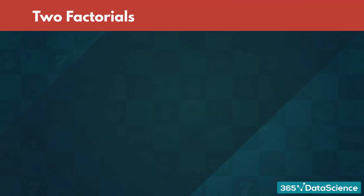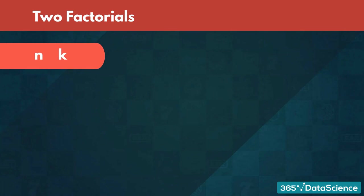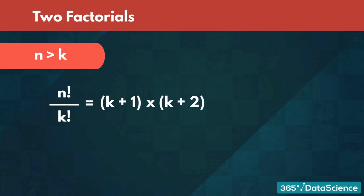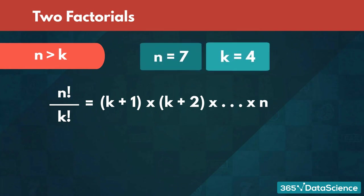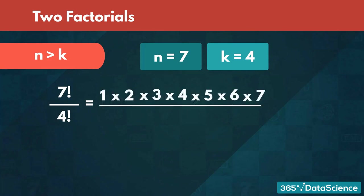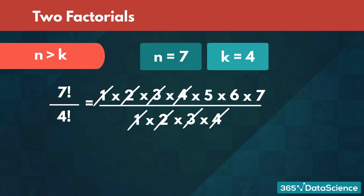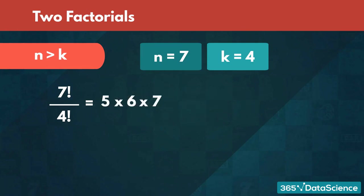An important observation is that if we have two natural numbers k and n, where n is the greater number, then n!/k! = (k+1) × (k+2) × ... × n. Let's look at an example where n is 7 and k is 4. Then, 7!/4! equals the product of the numbers between 1 and 7 over the product of the numbers between 1 and 4. We can simplify this by crossing out 1, 2, 3, and 4 since they occur in both parts of the fraction. Doing so leaves us with 5 × 6 × 7. Now you have the tools that will allow you to handle factorial operations.